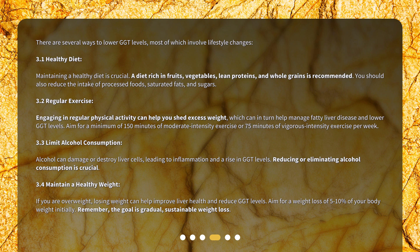Engaging in regular physical activity can help you shed excess weight, which can in turn help manage fatty liver disease and lower GGT levels. Aim for a minimum of 150 minutes of moderate intensity exercise or 75 minutes of vigorous intensity exercise per week.